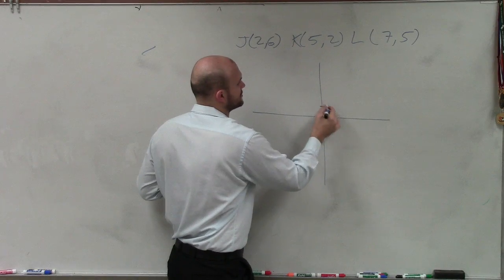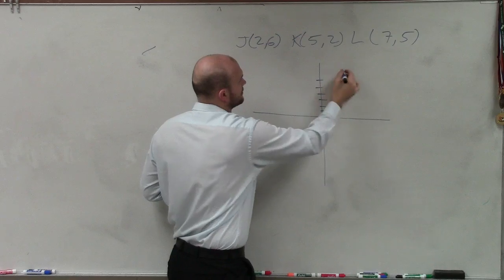So J is going to be 2, 6. 1, 2, 3, 4, 5, 6. That's J.